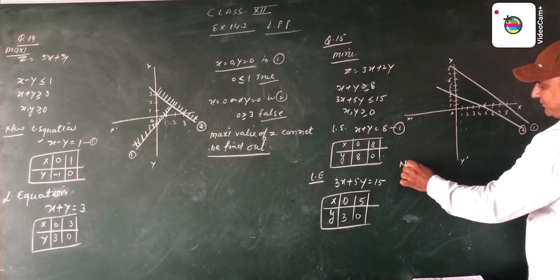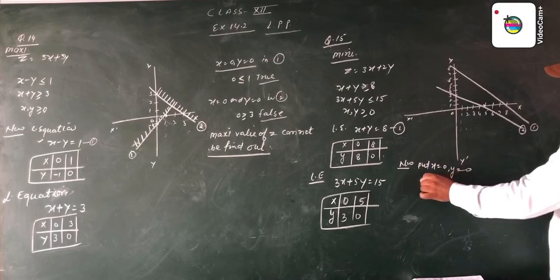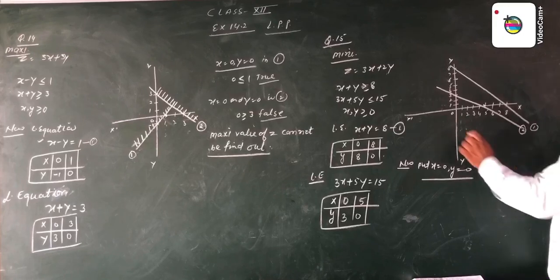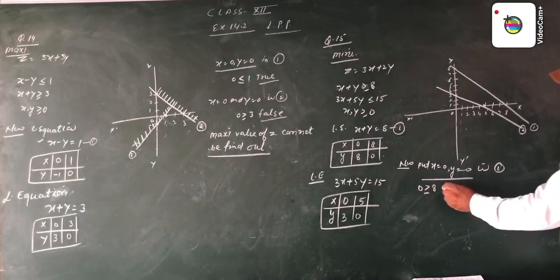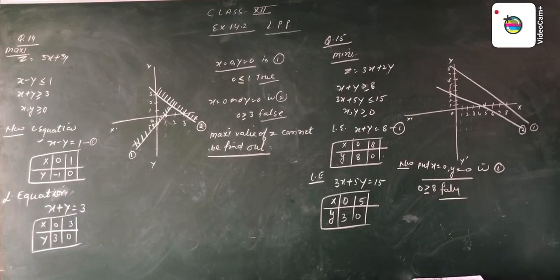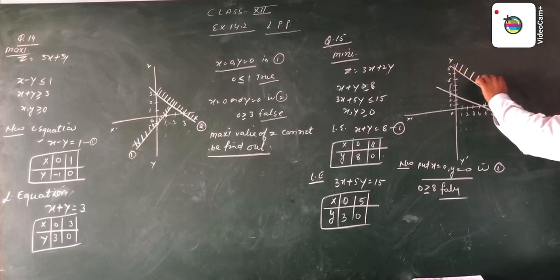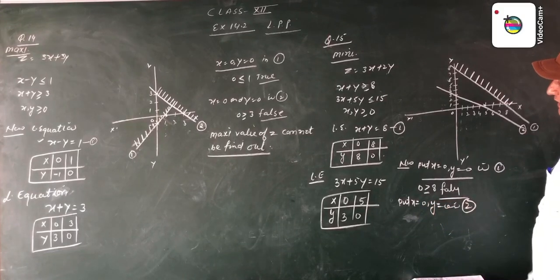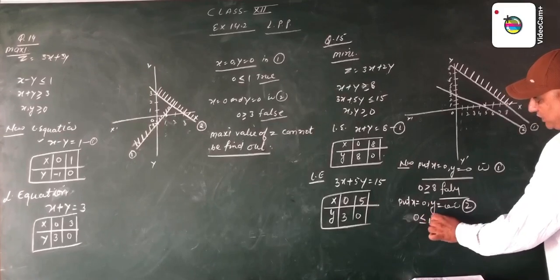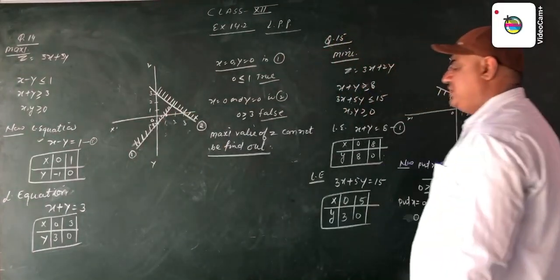Now we put x equal to 0 and y equal to 0 in equation first. We get 0 is greater than or equal to 8, which is a false statement. A false statement means the area becomes opposite to the origin. For equation second, putting x equal to 0 and y equal to 0, we get 0 is less than or equal to 50, which is a true statement.